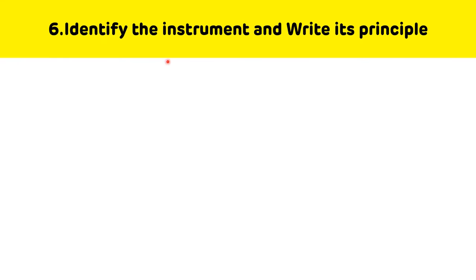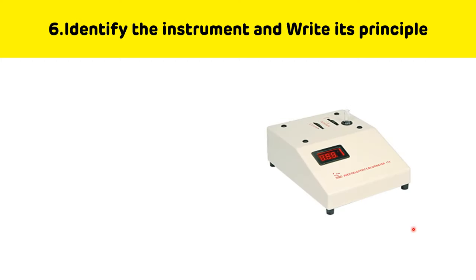The next question: identify the instrument and write its principle. This instrument is a colorimeter, and it works on Beer's and Lambert's laws. As per Beer's law, the log ratio of incident light to emergent light is directly proportional to the concentration of the substance if the length of the light path is constant. As per Lambert's law, it is directly proportional to the length of the light path if the concentration is constant.